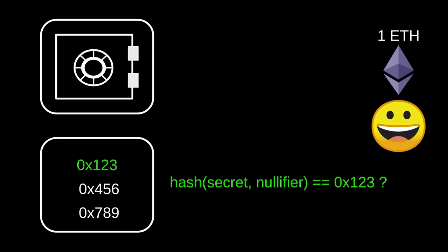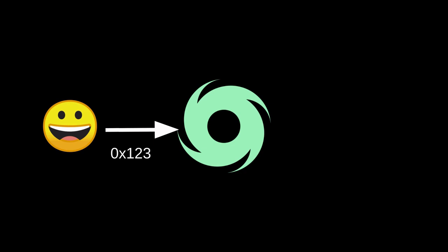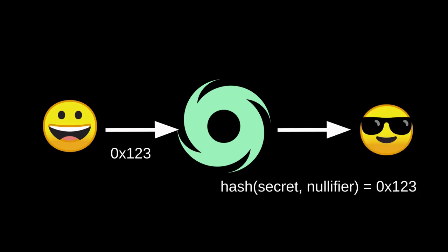How is it that the identity of the withdrawer is revealed? Well, we know that Alice deposited with hash 0x123. Later on, an anonymous user came along and revealed a secret and nullifier such that the hash of the secret and the nullifier is equal to 0x123. But because the hash function is a one-way function, this means that the only person who knows the secret and the nullifier that hashes to 0x123 is Alice. This is how the identity of the user is revealed on withdrawal.